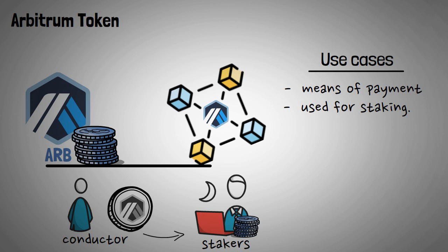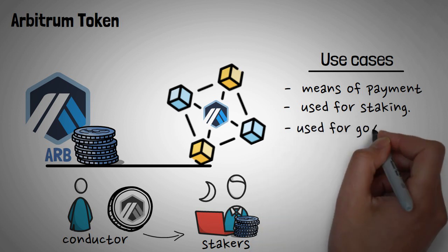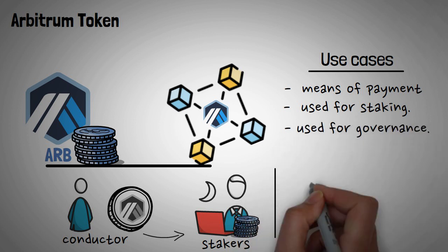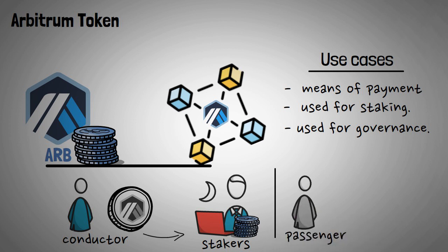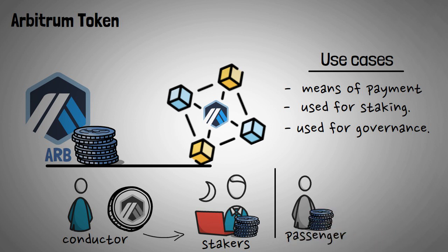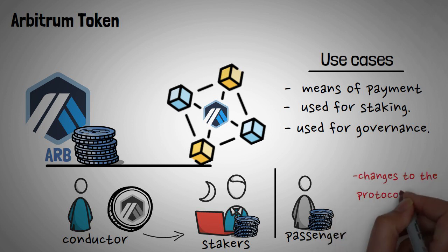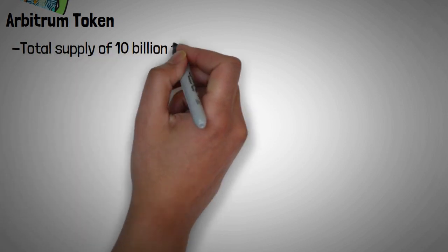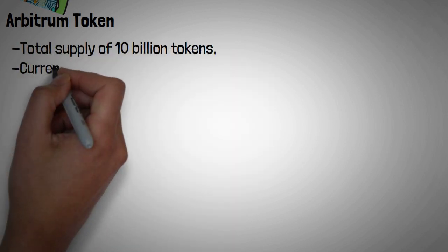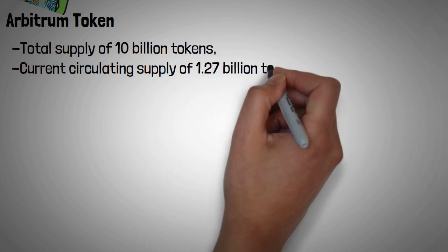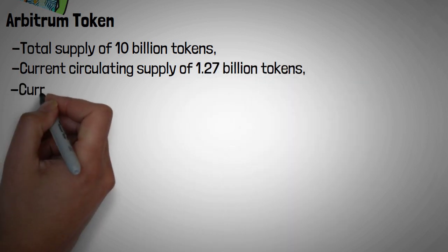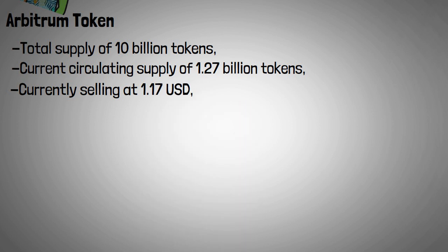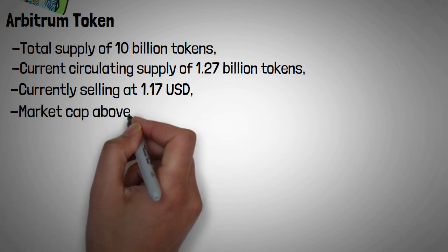The Arbitrum token can also be used for governance — token holders have a say in important network decisions, such as changes to the protocol or upgrades to the system. Arbitrum has a total supply of 10 billion tokens, with a current circulating supply of 1.27 billion tokens. It is currently selling at $1.17 USD, with a market cap above $1.4 billion dollars.